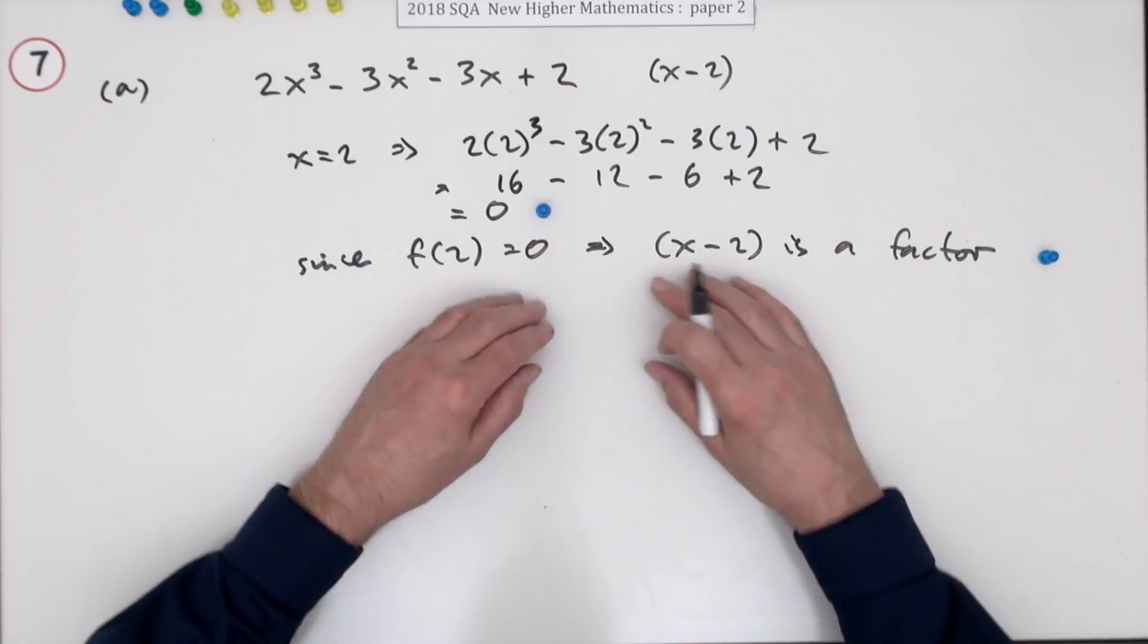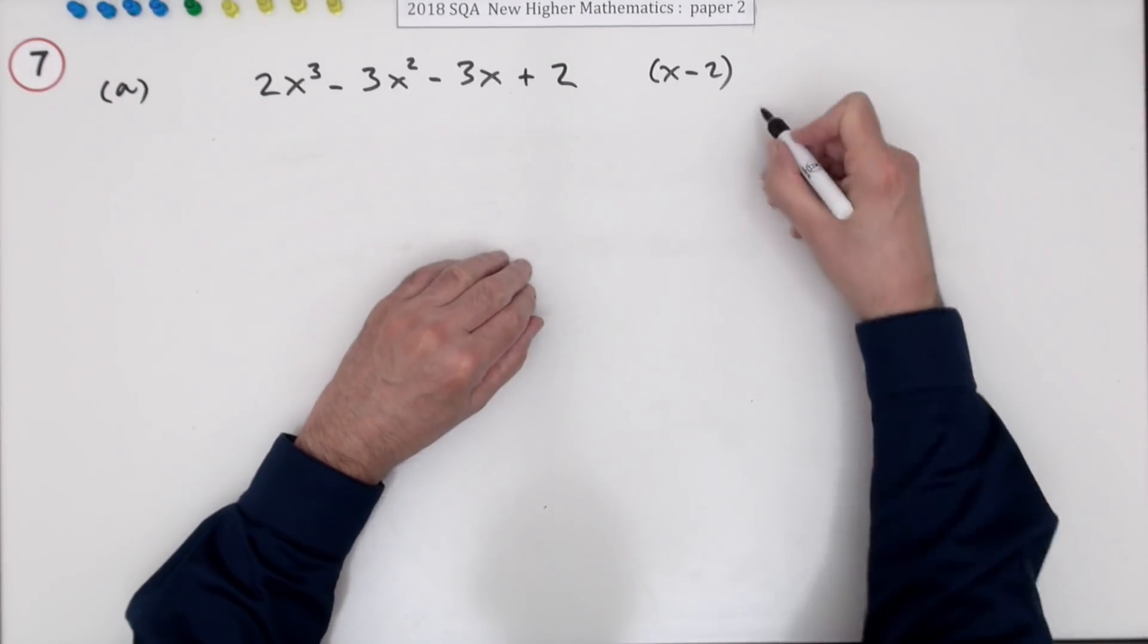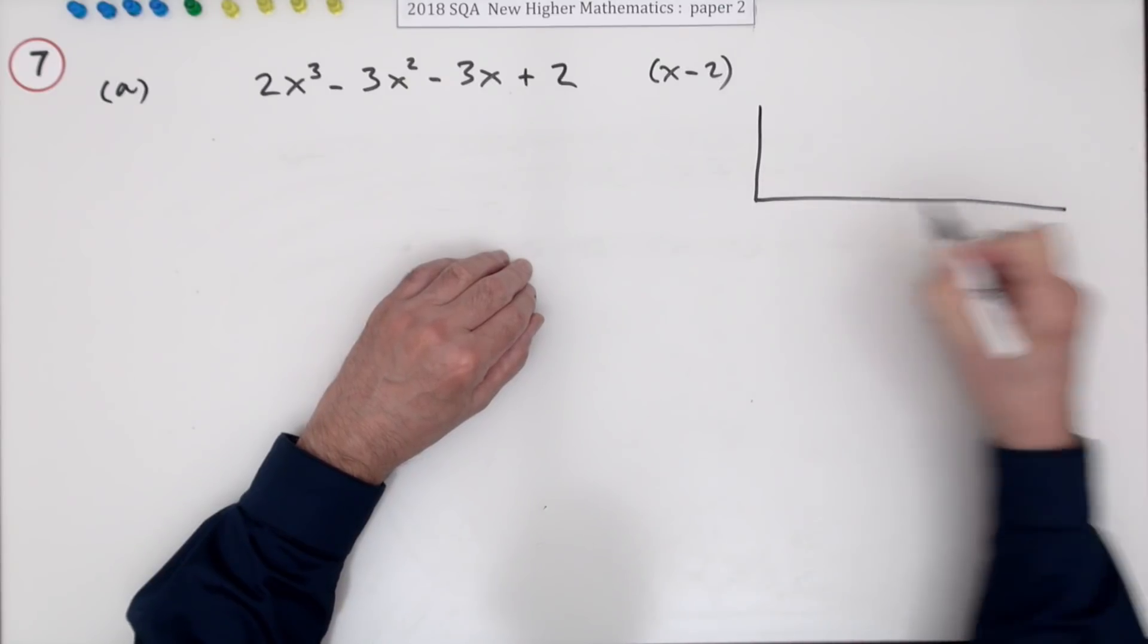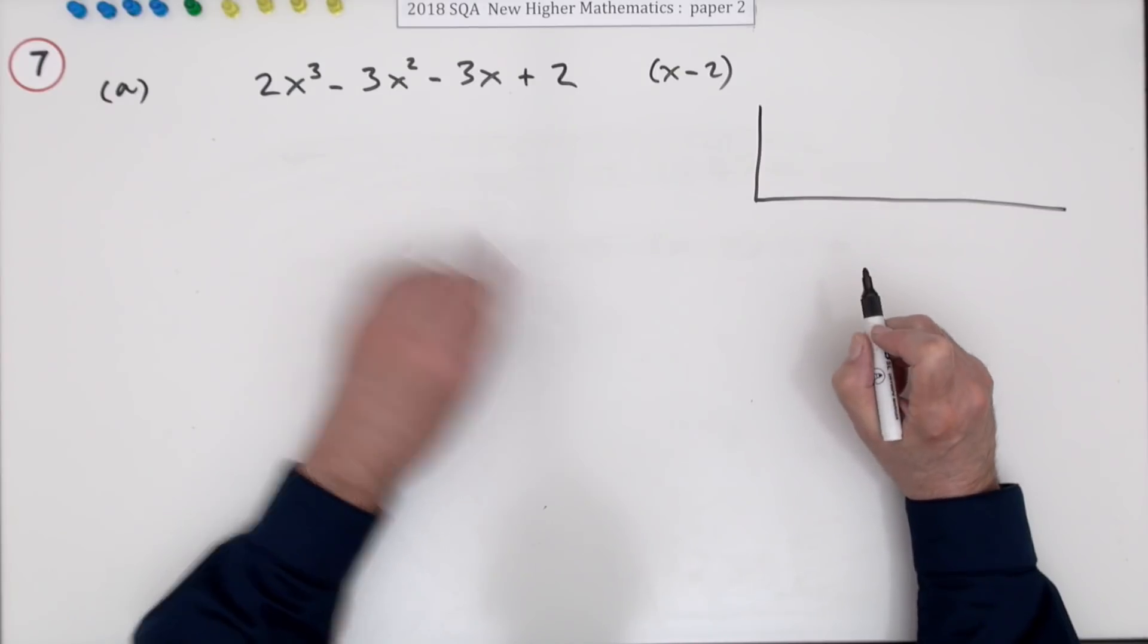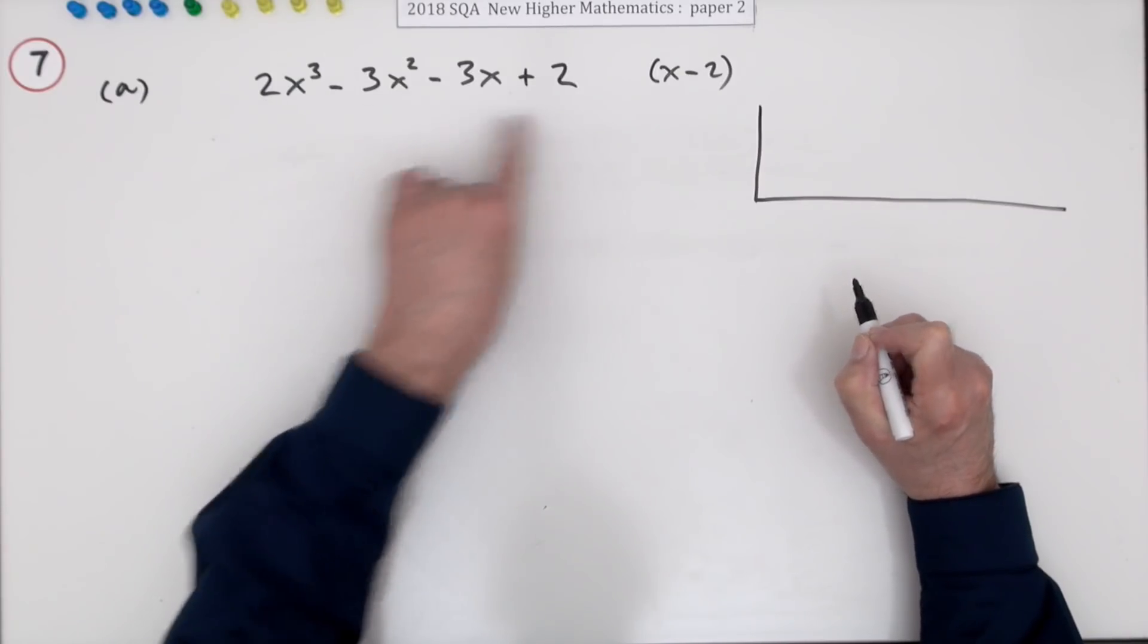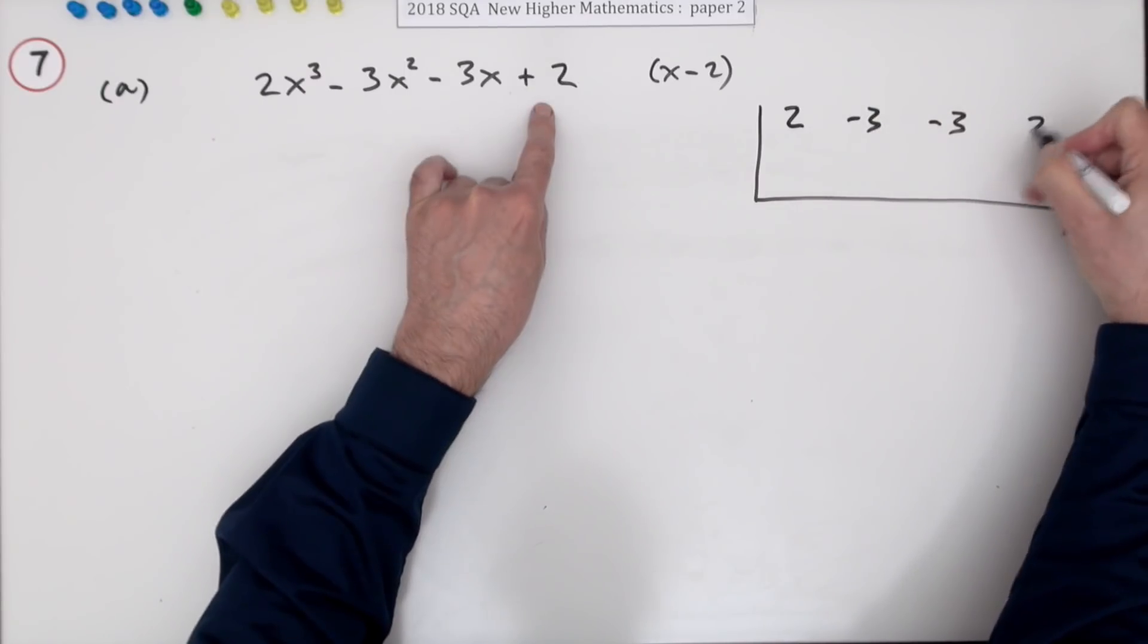It doesn't help you with the rest of the question. So you're better doing it the division way. And if you're going to be doing it the division way just use synthetic division rather than the full algebraic division. So the coefficients here 2, negative 3, negative 3, 2.